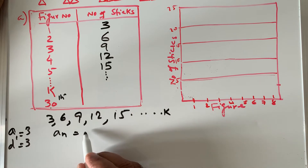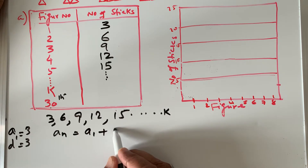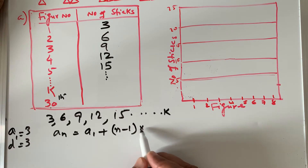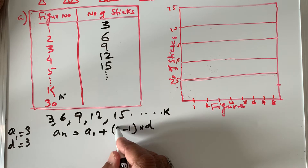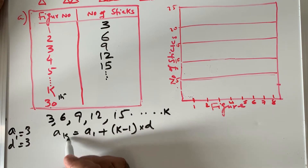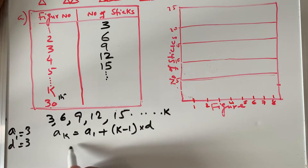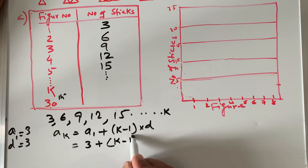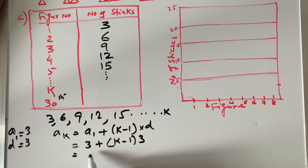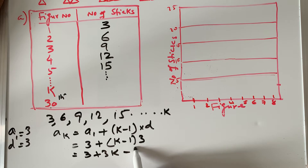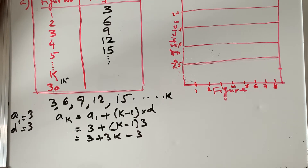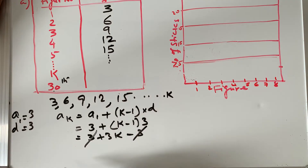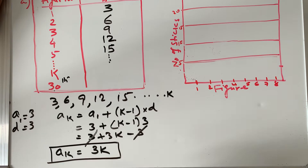We have the formula: the nth term equals a1 plus (n minus 1) times d. Since we're using k, the kth term equals a1 plus (k minus 1) times d. Substituting: 3 plus (k minus 1) times 3. Expanding: 3 plus 3k minus 3. The plus three and minus three cancel, leaving us with ak equals 3k.